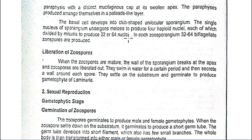The base cell becomes the unilocular sporangium containing a nucleus. The nucleus undergoes meiosis to become four cells, and then each of those cells divides by mitosis, producing 32 to 64 cells total. These 32 to 64 cells are the biflagellated zoospores.